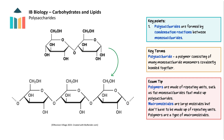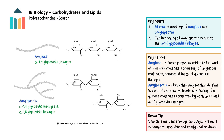More monosaccharides can be added through condensation reactions to form a polysaccharide such as starch. The storage carbohydrates of plants and animals are starch and glycogen respectively. Starch is made up of two different polysaccharides: amylose and amylopectin.